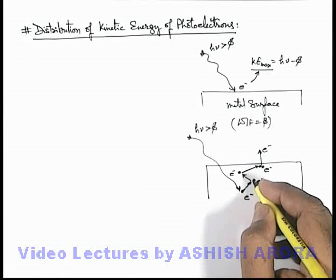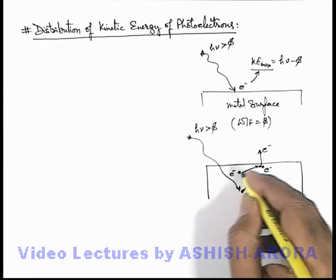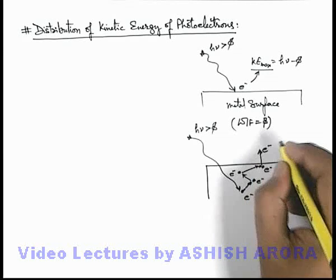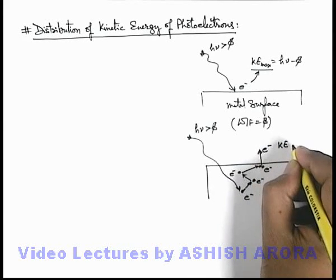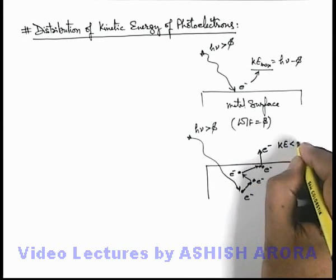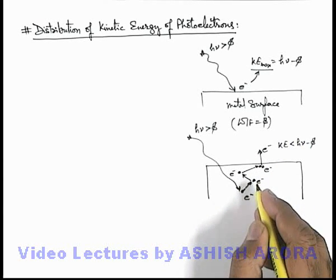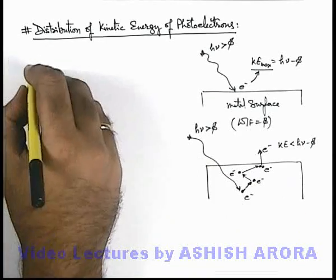So in this situation we can say in collision it may supply some energy to the neighboring electrons, due to which when the electron will come out, its kinetic energy will certainly be less than hν minus φ, because some energy it has lost in the collisions also.